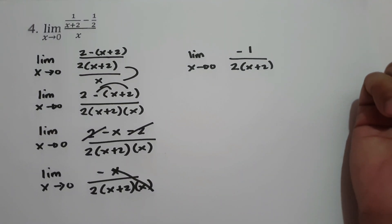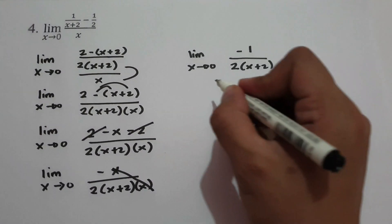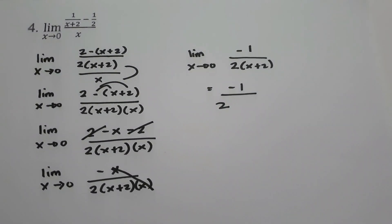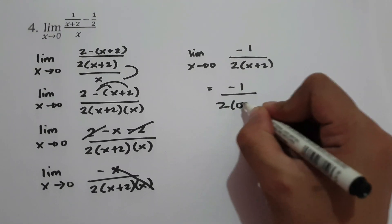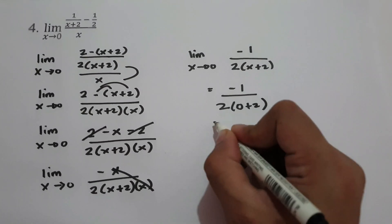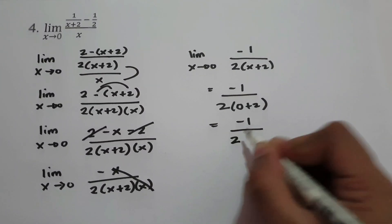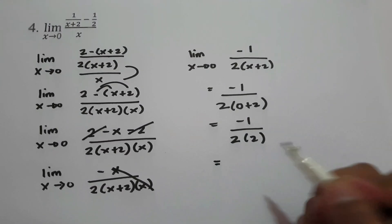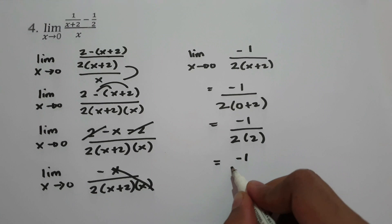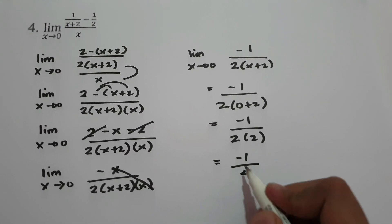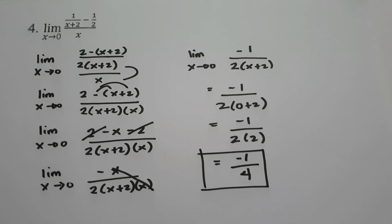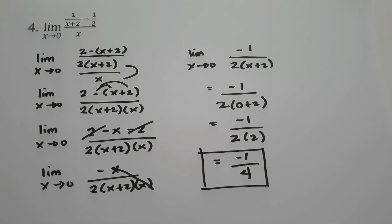And we have the limit as x approaches 0, that is negative 1 over 2 times x plus 2. So this time, we can substitute the value of x. That is negative 1 over 2 times 0 plus 2. We have negative 1 over 2 times 2, and 0 plus 2 is 2. So our final answer is negative 1 over 4. So I hope you will learn from this lesson. Thank you so much for watching, and God bless us all.